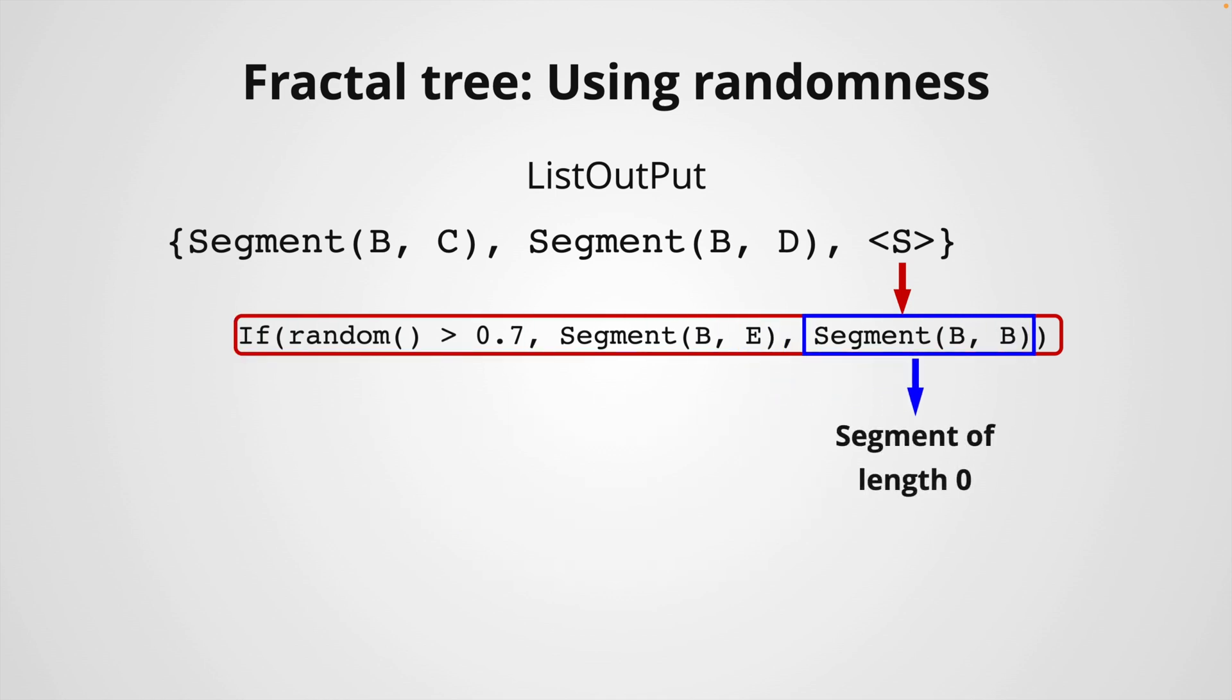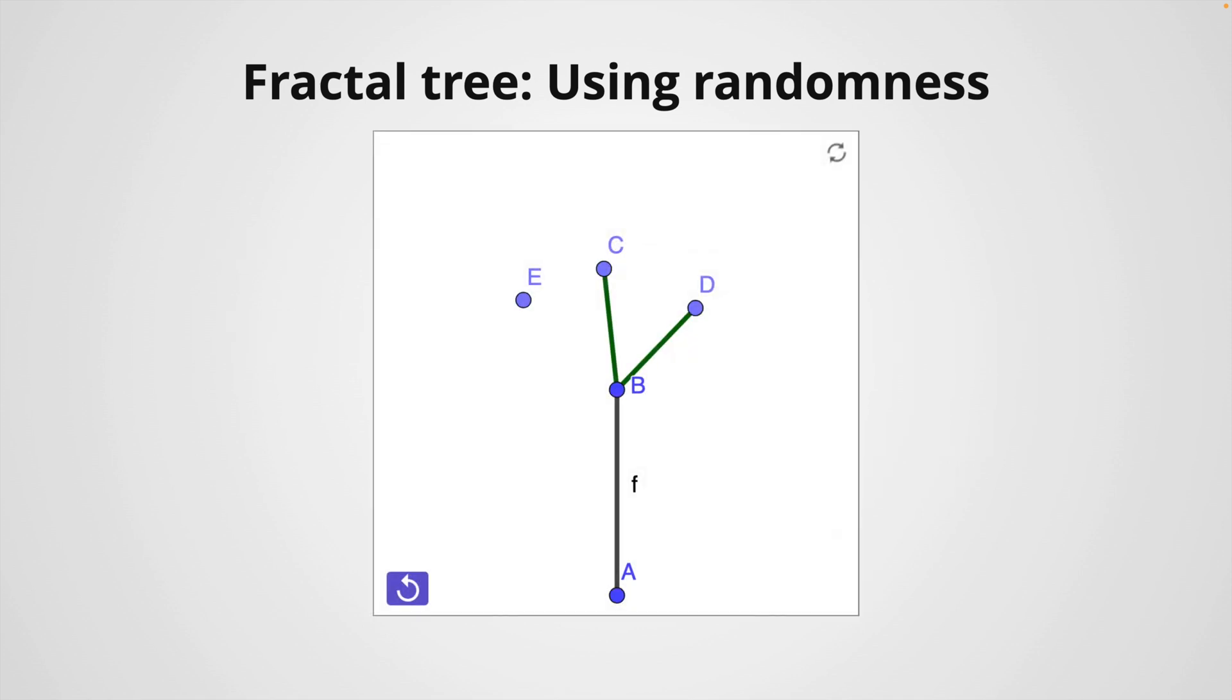On the other hand, if random is less than or equal to 0.7, then it creates a single point since the command segment from B to B defines only a point or a segment of length 0. As a result, we obtain this new construction where the two branches will show up and sometimes I will have three branches randomly every time I refresh the construction.